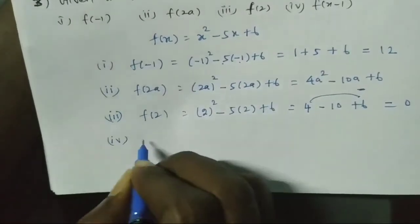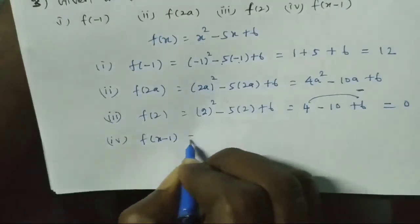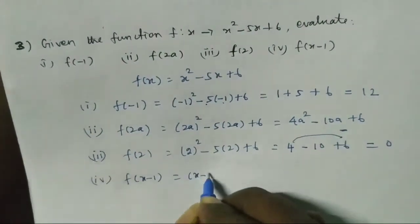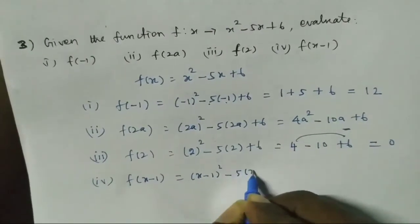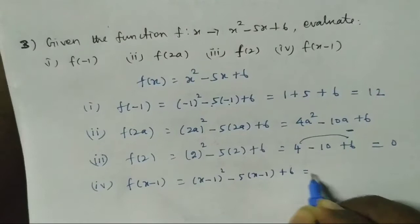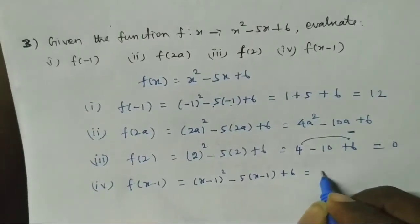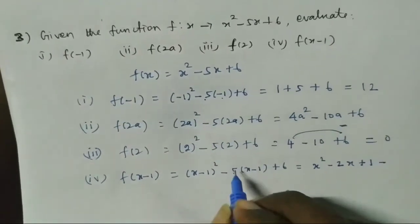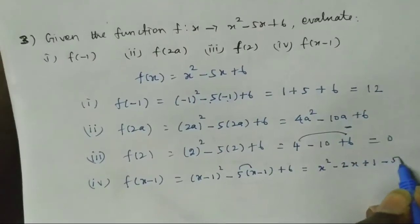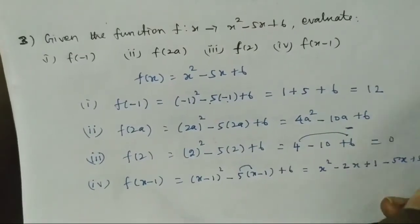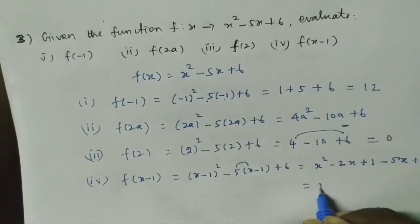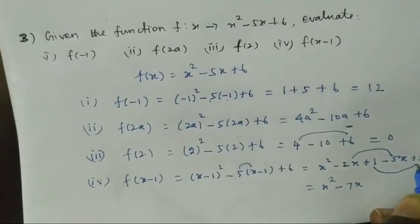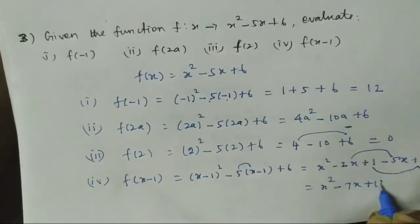Last one is f(x-1). So f(x-1) = (x-1)² - 5(x-1) + 6. x minus 1 whole square is x² - 2x + 1, minus 5 into x minus 1 is minus 5x plus 5, plus 6. The final answer is x² - 7x + 12.